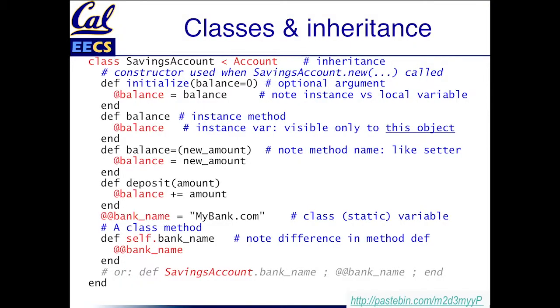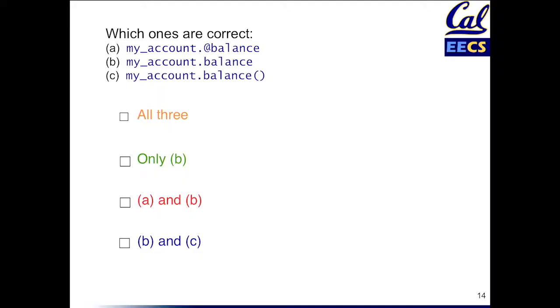In a moment I'm going to fire up the Ruby interpreter so we can actually try these examples live. But before we do that, let's test your recollection. Remember: everything is an object, everything is a method call — a.b. Which ones of these are a correct way of getting access to the balance of a bank account instance?